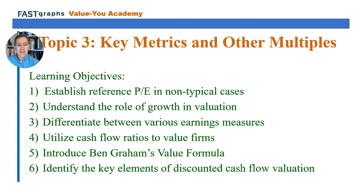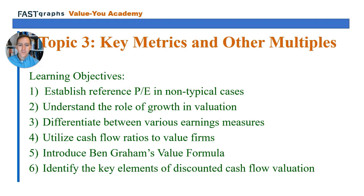As a recap for topic three: we looked at what the reference PE is for low growth and high growth firms. It's 15 for normal growing firms, the Graham-Dodd formula for low growth firms, and PE equals the growth rate for high growth firms. This is because there is a relationship between growth and valuation — higher growth means higher multiple, lower growth means lower multiples. We talked about various ways of measuring earnings in FastGraphs, non-earnings valuation ratios including cash flow and EBITDA, and the key elements of discounted cash flow.